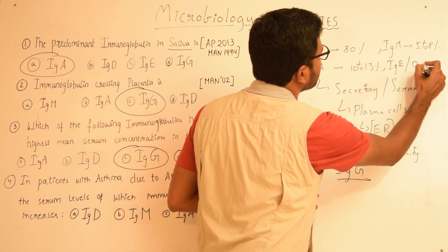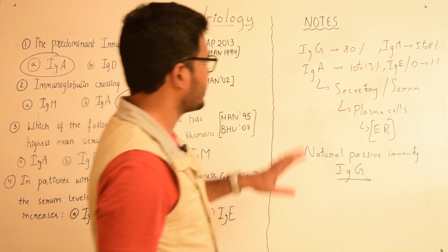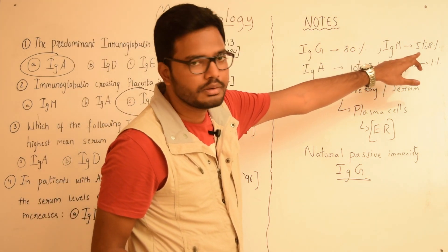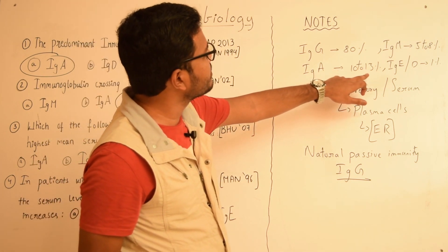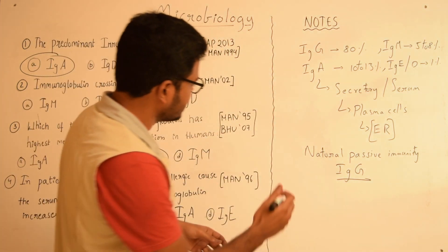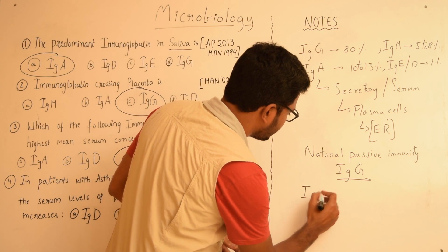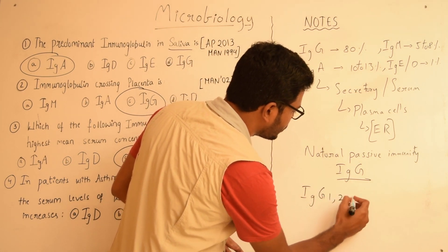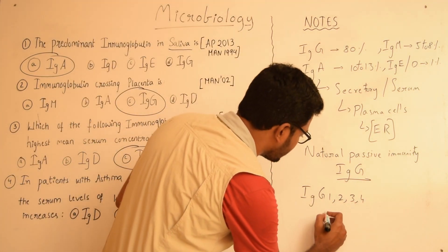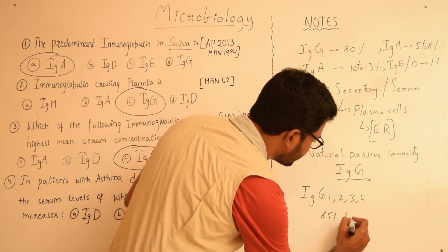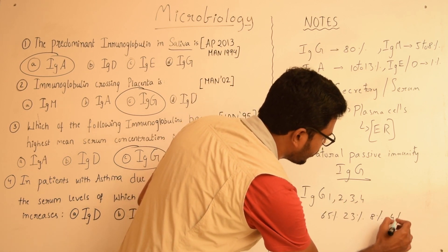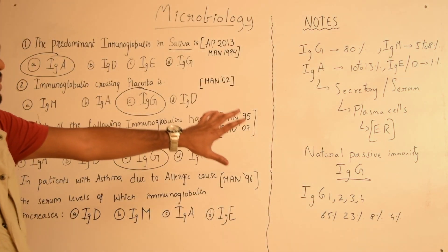IgE and IgD each account for approximately 1%. So: IgG is 80%, IgA is 10–13%, IgM is 5–8%, and IgE and IgD are 1% respectively. Within IgG, there are four subclasses — IgG1, IgG2, IgG3, and IgG4 — with concentrations of approximately 65%, 23%, 8%, and 4% respectively.